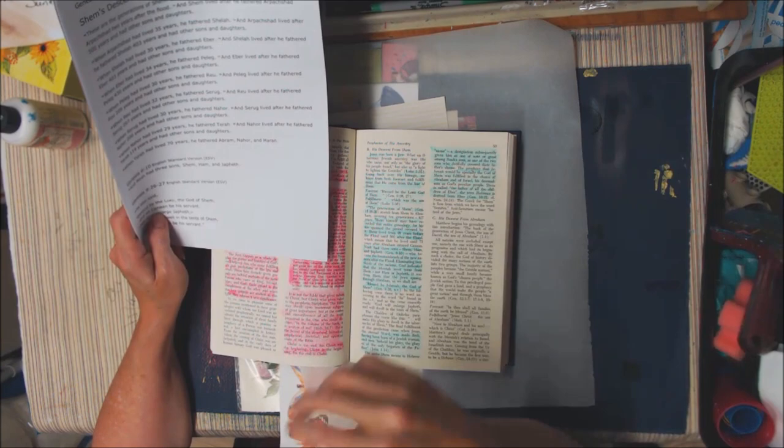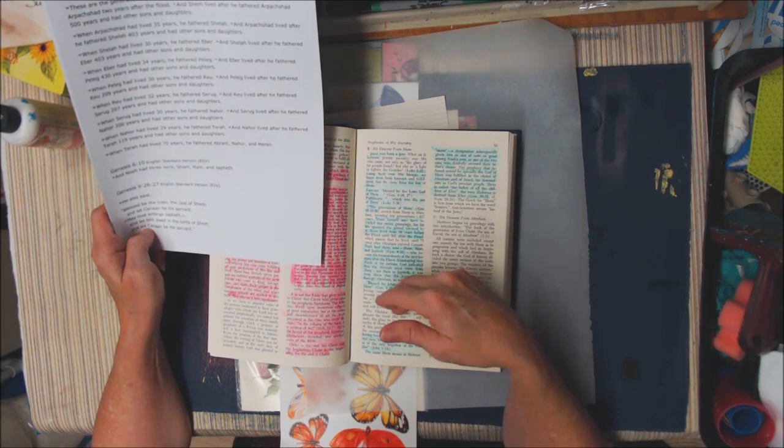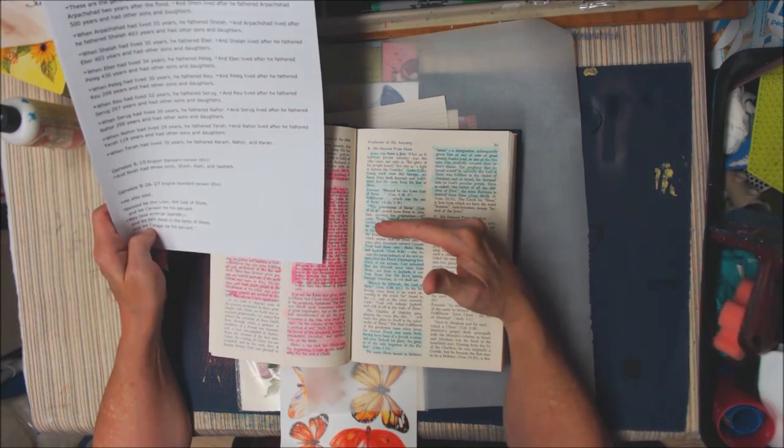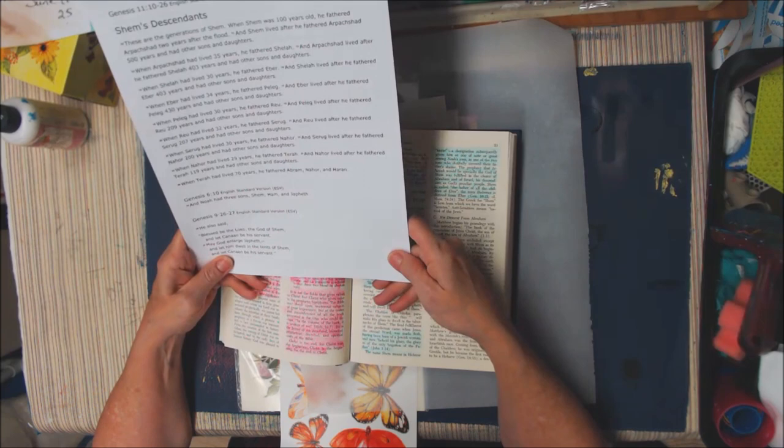In the following verse, may God enlarge Japheth and let him dwell in the tents of Shem, the word 'he' is not found in the original version. Somebody added it in. So the real verse reads, God will enlarge Japheth and will dwell in the tents of Shem. That shows more directly that Jesus comes from Shem.